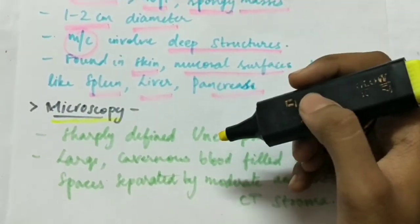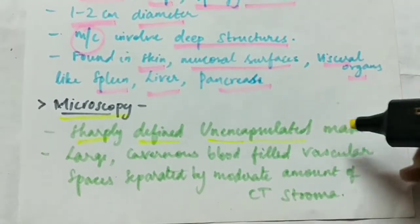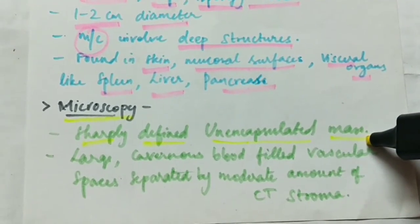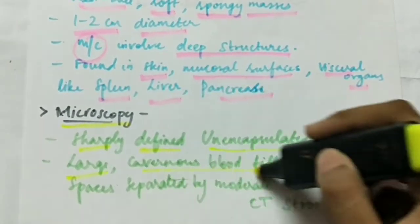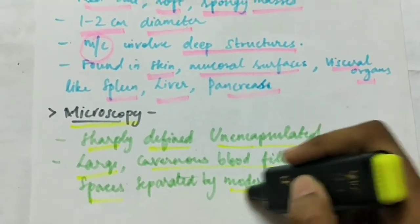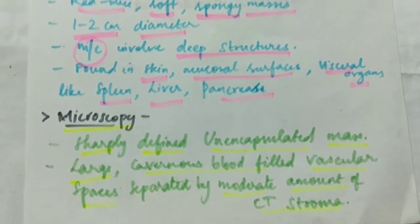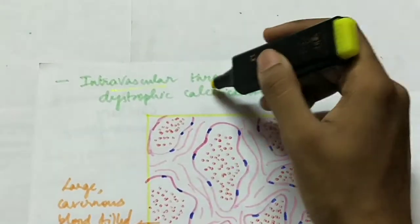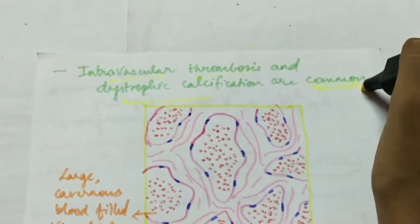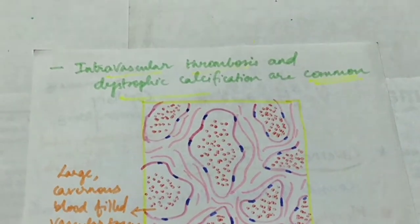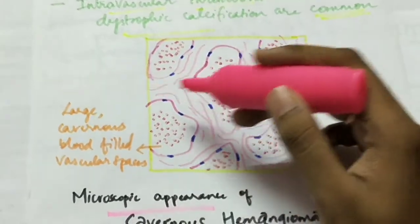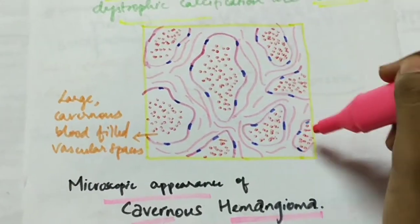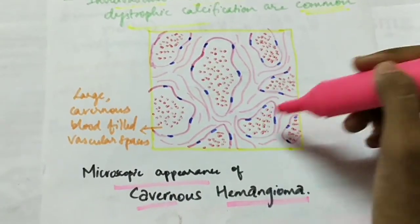The microscopy of cavernous hemangioma: it is a sharply defined but not encapsulated mass — similar to capillary hemangioma, it is not surrounded by a capsule. It consists of large cavernous blood-filled vascular spaces which are separated by a moderate amount of connective tissue stroma. Intravascular thrombosis and dystrophic calcifications are common in cavernous hemangioma. This microscopic picture shows the large cavernous blood-filled vascular spaces separated by moderate connective tissue stroma.